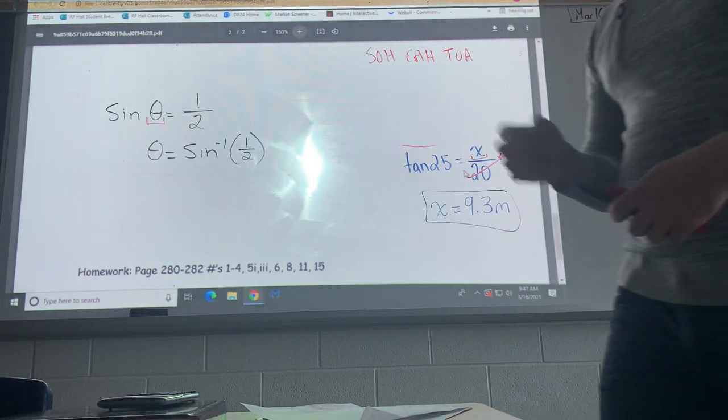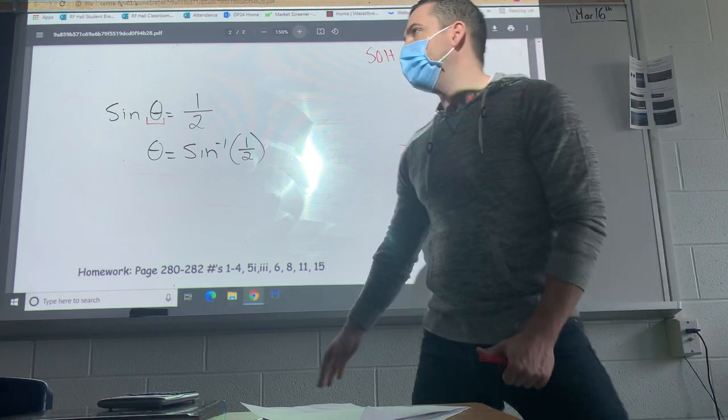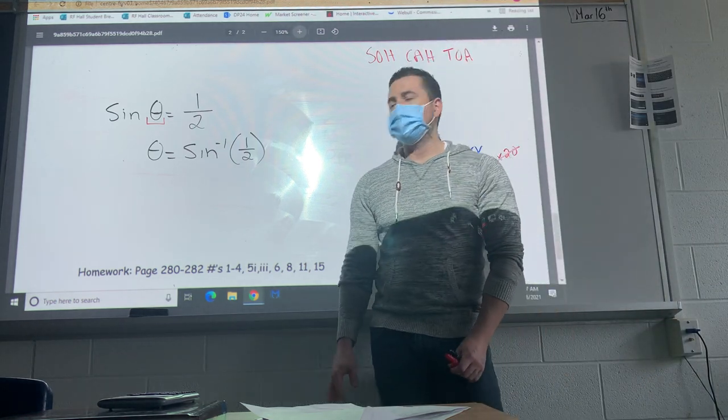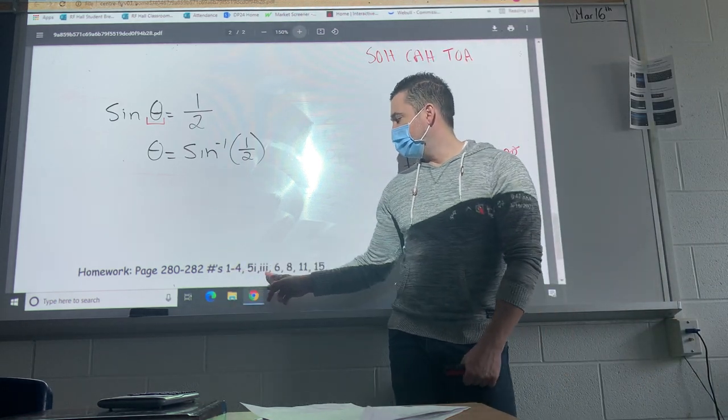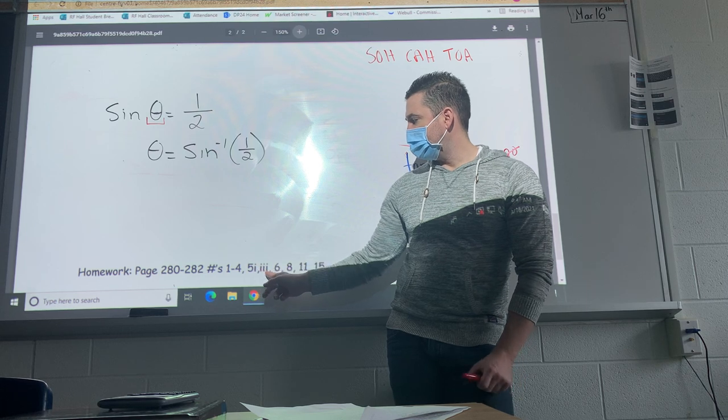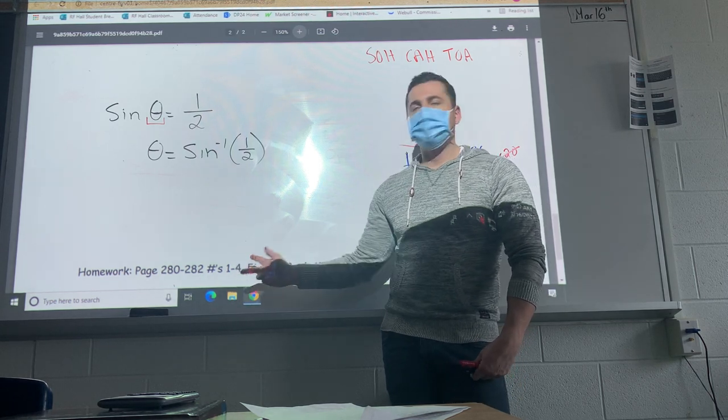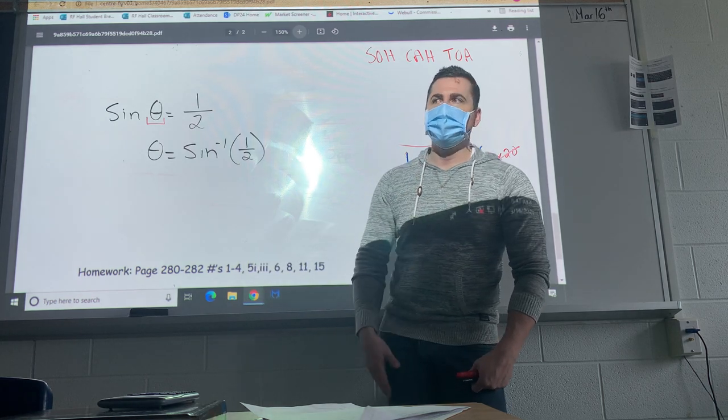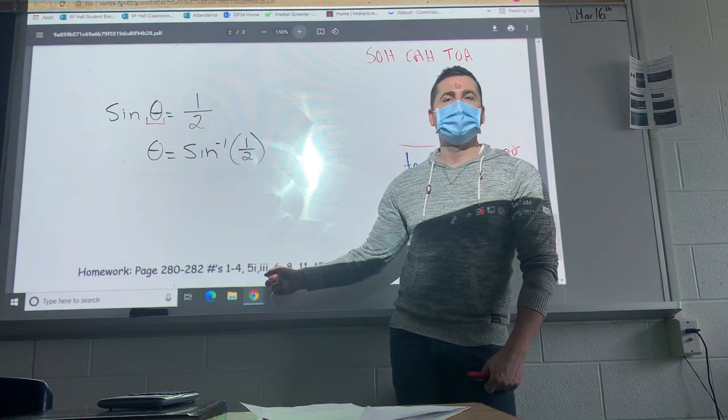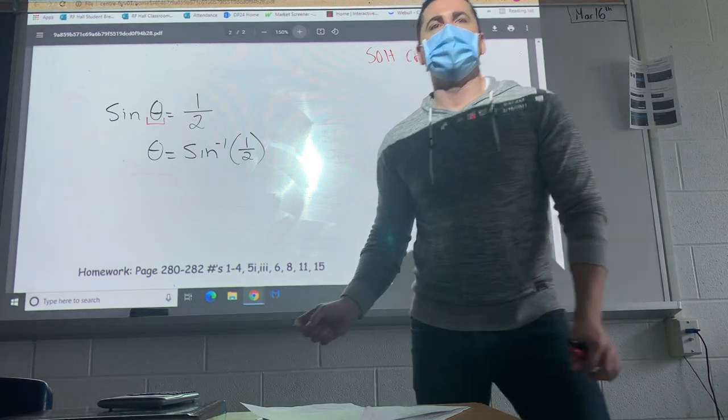Okay, so that's your homework there, page 280. Again, crucial lesson 1 to 4, for 5 just do i, 3i, 6, 8, 11, 15. Most of these, like the first few questions, just plug this stuff into your calculator. Okay, then it becomes solve some triangles and then we'll get to some word problems.